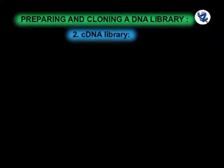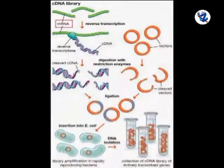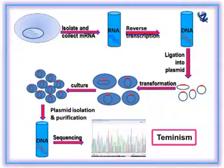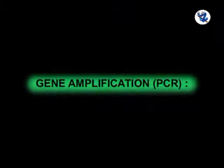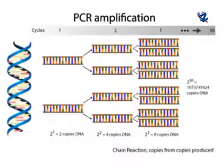Then, cDNA library: cDNA is complementary DNA, produced using mRNA by the process called reverse transcription. The process is called Teminism, named after its discoverer Temin. Gene amplification and PCR: gene amplification is obtaining multiple copies of a known DNA sequence that contains a gene. Gene amplification can be done artificially by using the polymerase chain reaction (PCR) technique.